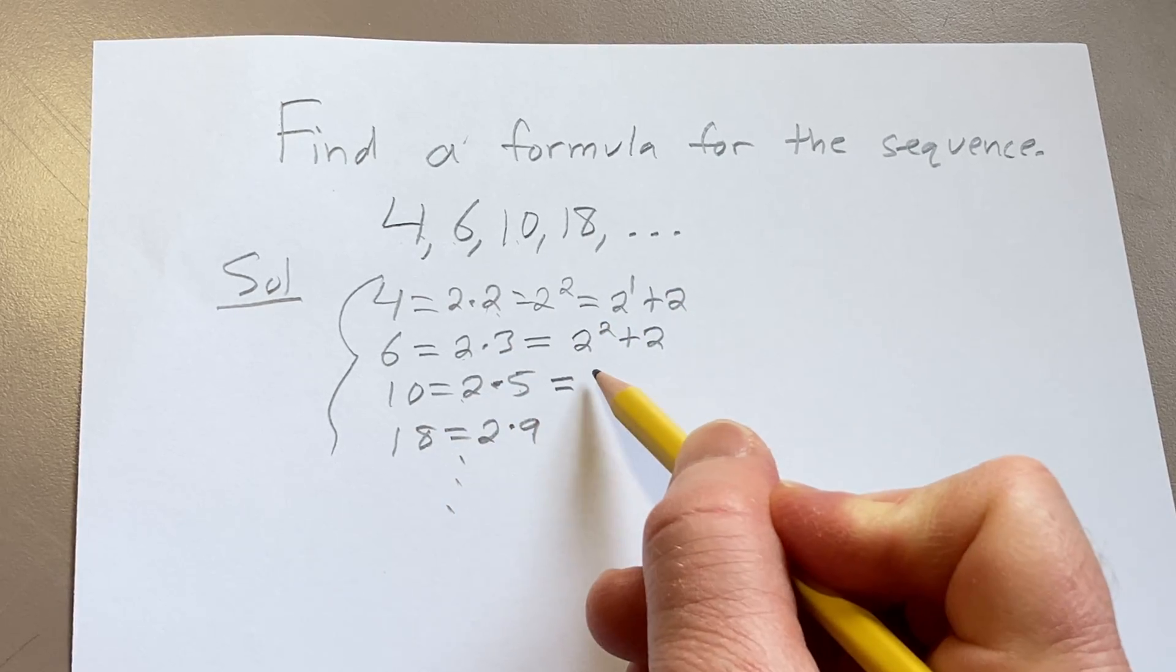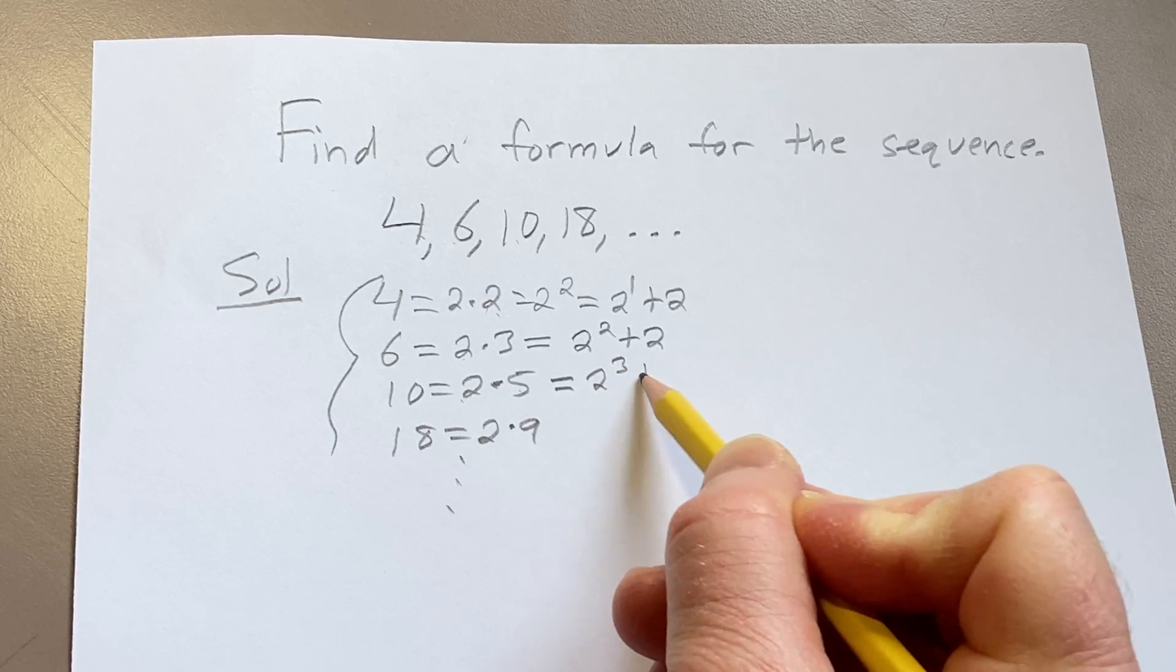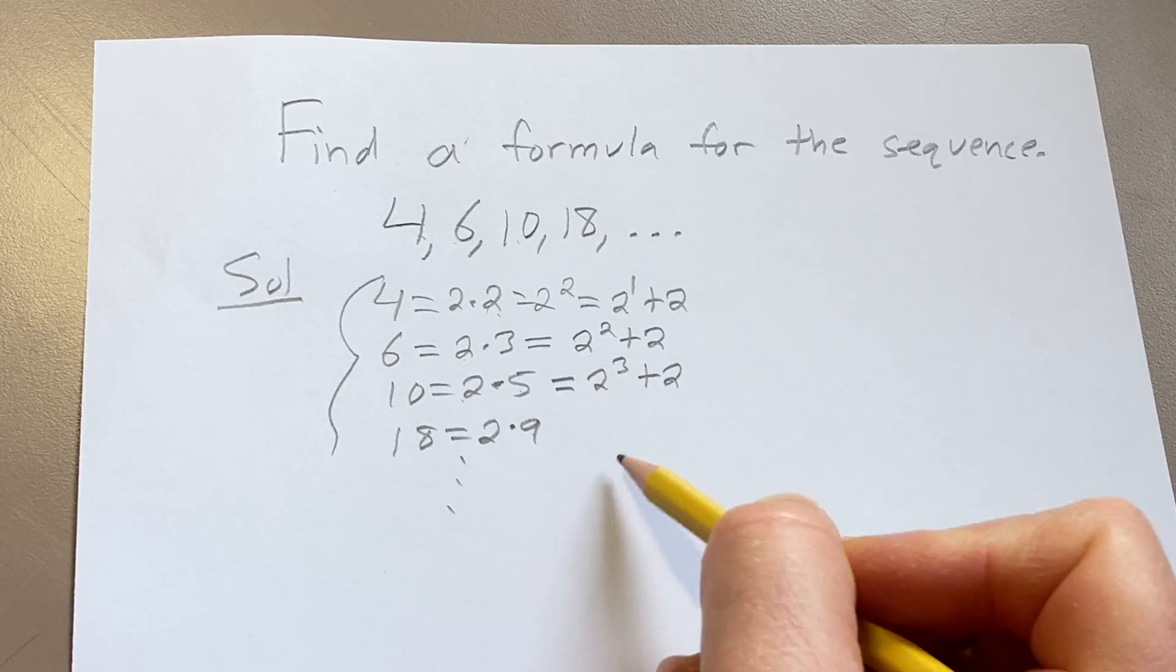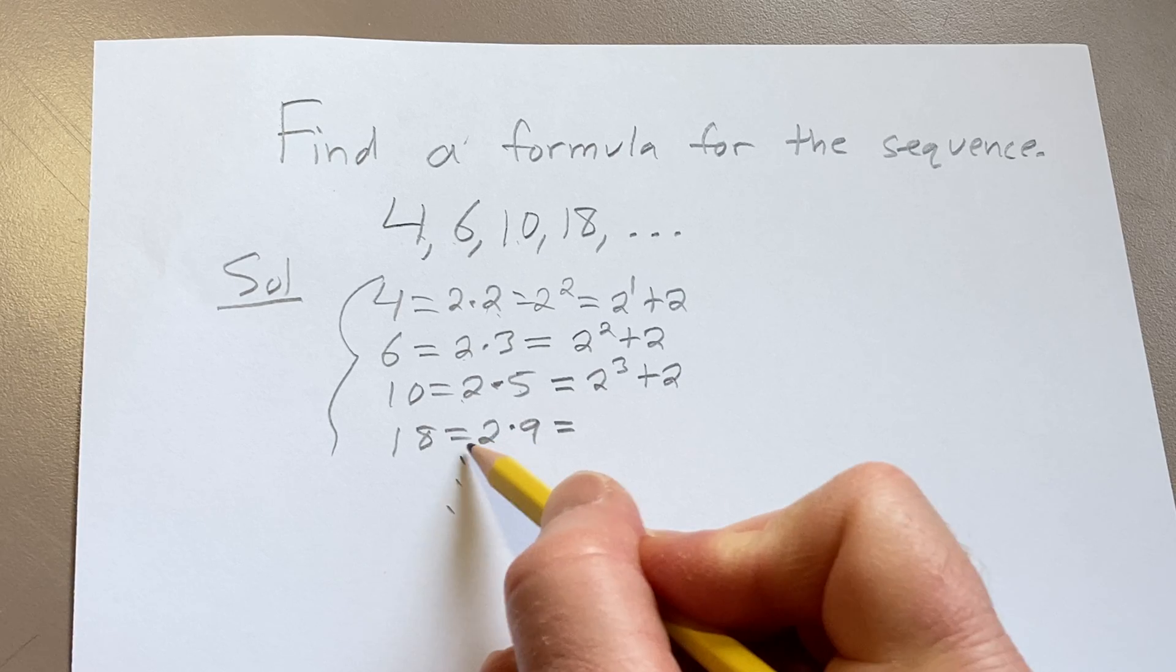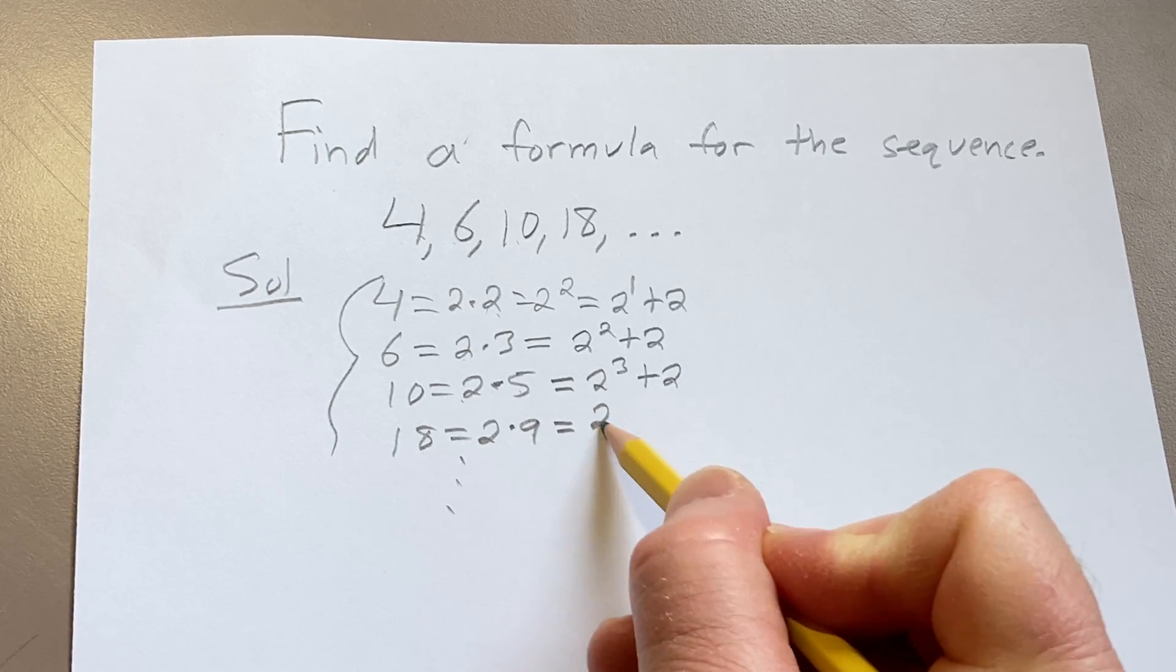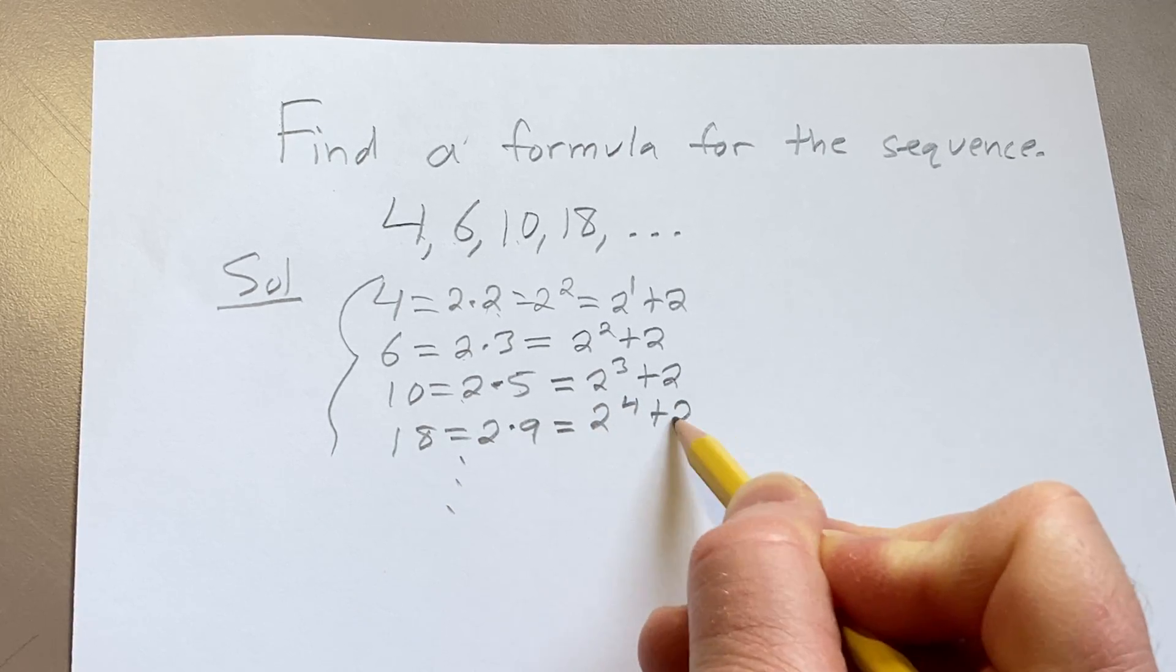And 10 is 2 times 5, but you can think of that as 2 cubed plus 2. 2 cubed is 8. And then 18 is 2 times 9, but you can also think about this as 2 to the 4th plus 2.